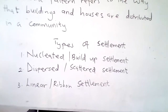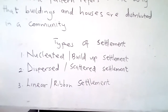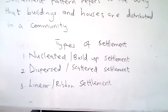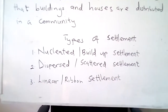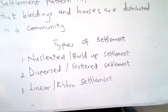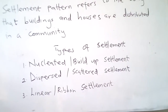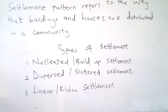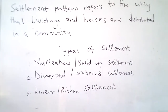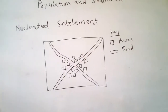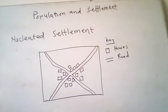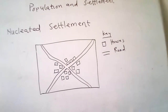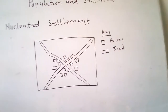The three types of settlement patterns in Ghana are: nucleated or built-up settlement, dispersed or scattered settlement, and linear or ribbon settlement. Let's look at diagrams of nucleated, dispersed, and linear settlements and discuss each one.